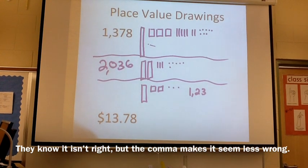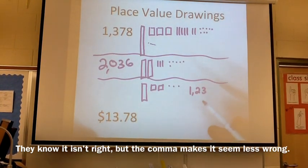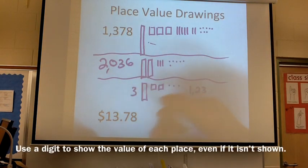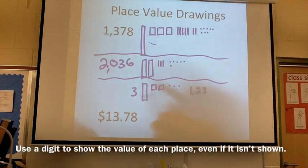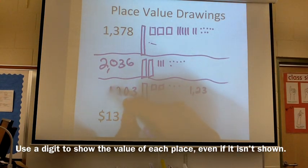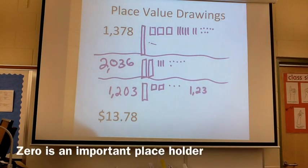What we try to get the kids to do is to write down the value of each place. So we have three ones. How many tens do we have? Zero, that's right. Two hundreds and one thousand. That's how we arrive at the correct answer.